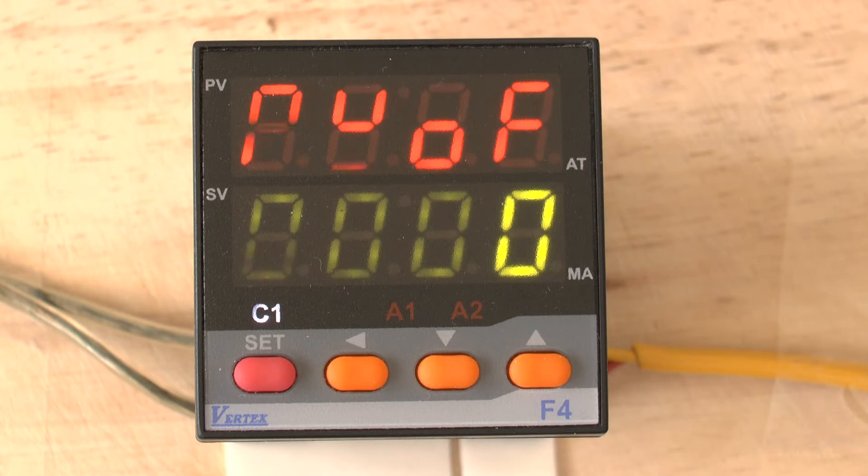This parameter allows for a manual manipulation of the process offset that may exist between the measurement of the probe and the reading on the controller PV display.